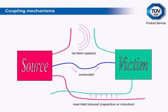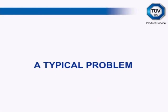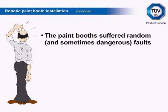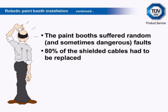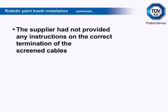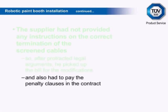As a typical EMC problem from a commercial aspect: a major manufacturer of automotive parts commissioned a series of robotic paint booths. To save cost, it was agreed that the cabling would be installed by contractors. This large equipment involved both movement and solvent spray — from a safety point of view, we don't want the robot moving or spraying solvent when it shouldn't be. The paint booths suffered random and sometimes dangerous faults. After an EMC investigation, 80% of the shielded cables had to be replaced using correct shield termination. The supplier had not provided any instructions on correct termination of the screened cables, so after protracted legal arguments, he picked up the bill for the modifications and also had to pay the penalty clauses in the contract.